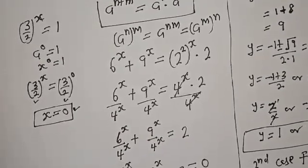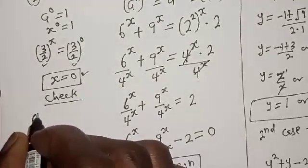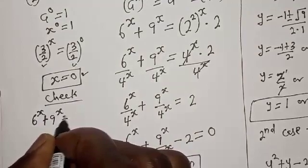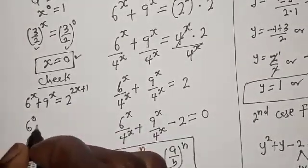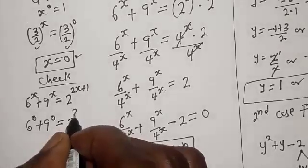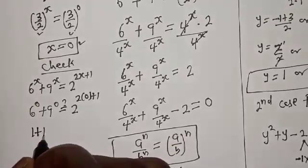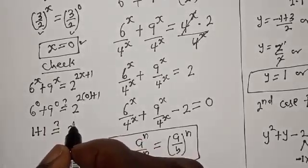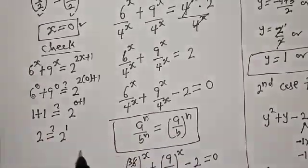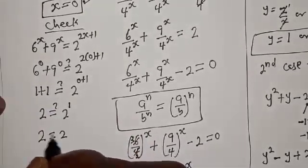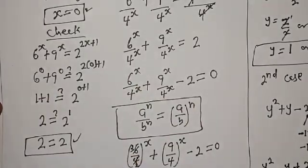Let's check to confirm our answer. With the given equation 6 raised to power s plus 9 raised to power s equals 2 raised to power 2s plus 1, substituting s equals 0: 6 to the power 0 plus 9 to the power 0 equals 2 to the power 0 plus 1, giving 1 plus 1 equals 2 to the power 1, so 2 equals 2, which satisfies the equation. If you enjoyed the class, please don't forget to like, share, comment and subscribe. Thank you.